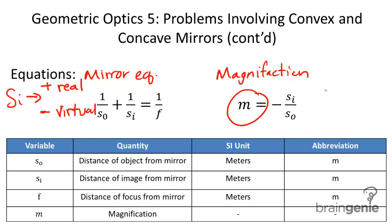Now, if M, if M is negative, that means that the object is inverted. If M is positive, that means the object is upright. That tells you a lot.